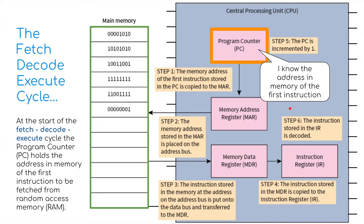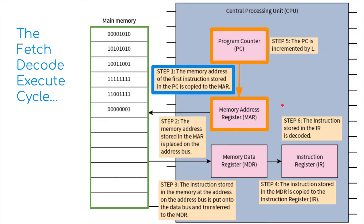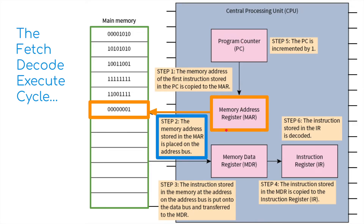The memory address of the first instruction stored in the PC — the program counter — is copied to the memory address register. So it's copied from here to here. It then goes along the address bus, so the main memory address stored in the MAR is placed on the address bus to go to the RAM memory.